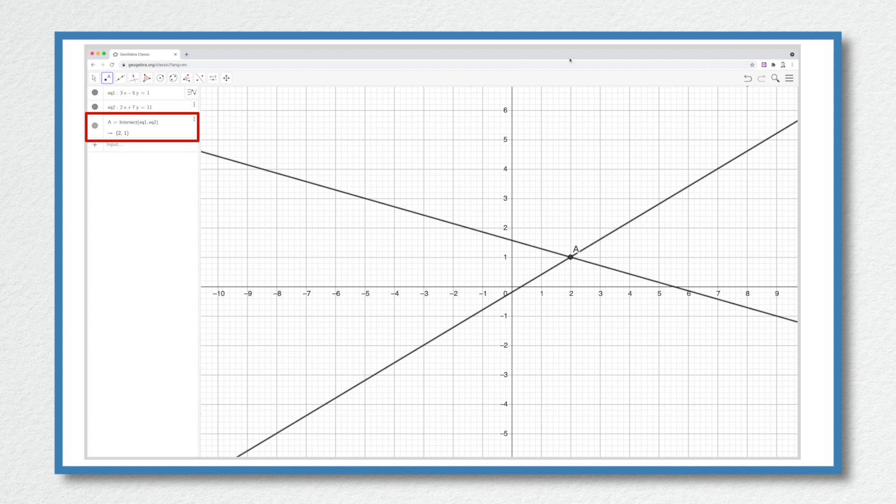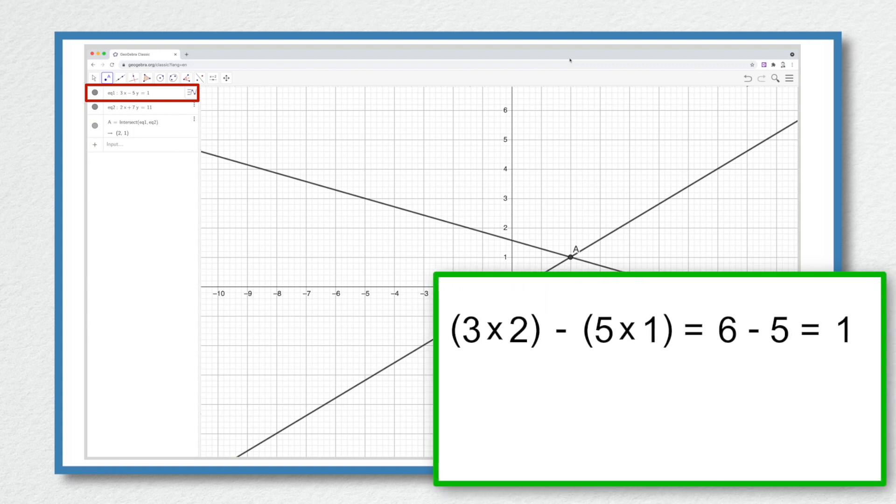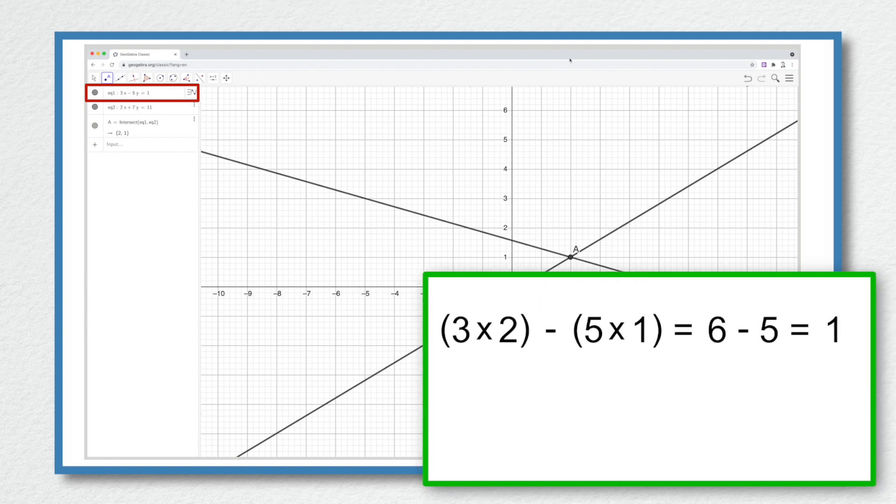If I was to plug these two values into either of the equations they satisfy those two equations. So for the first equation that's 3 multiplied by 2 subtract 5 multiplied by 1 and that's 6 subtract 5 which is equal to 1. If I was using the second equation that's 2 multiplied by 2 add 7 multiplied by 1, so that's 4 add 7 which is equal to 11.